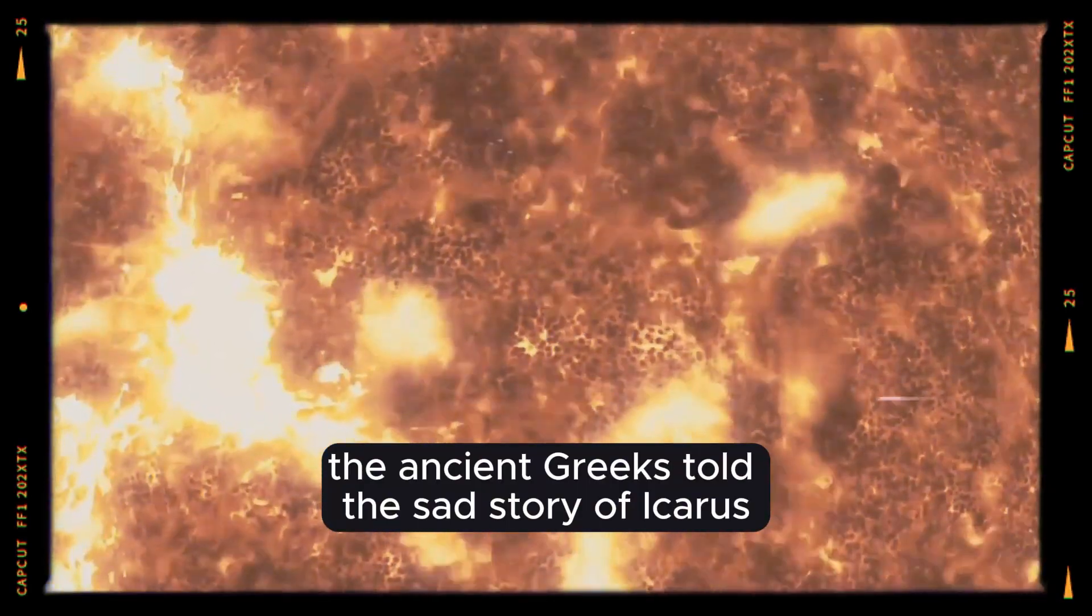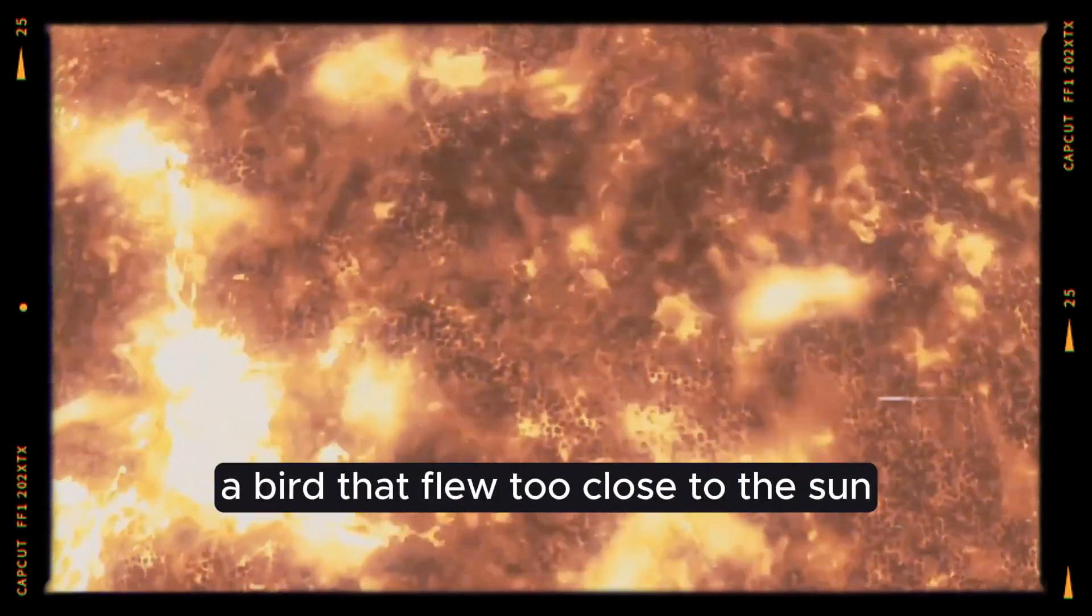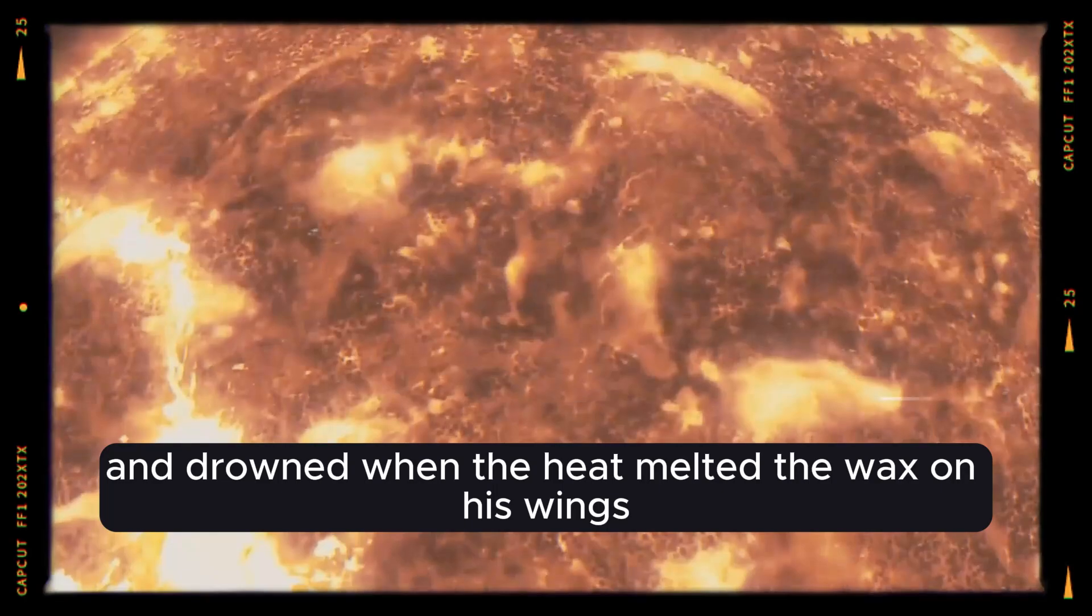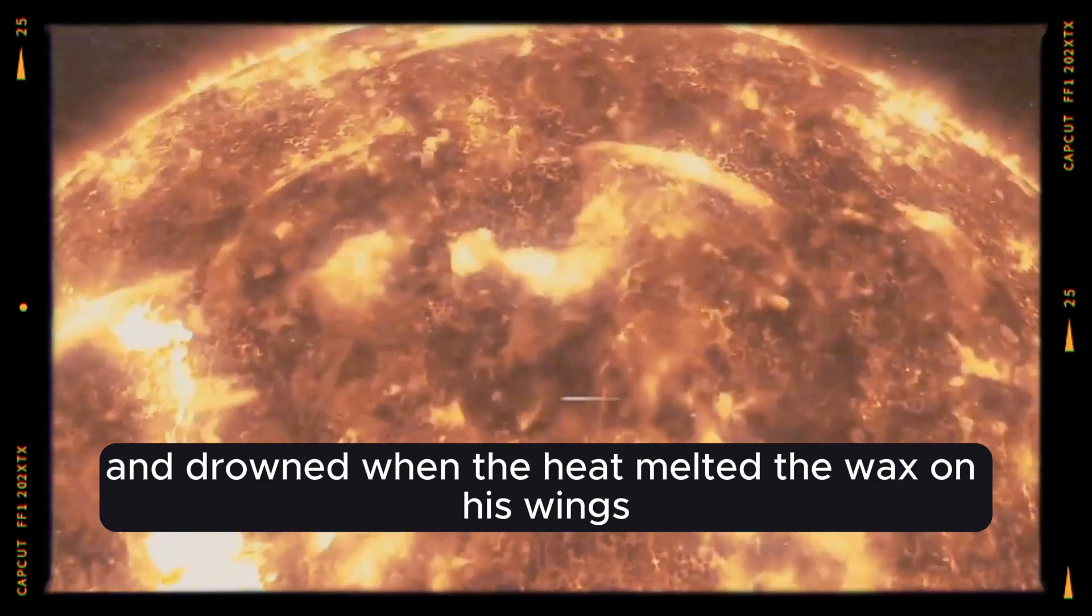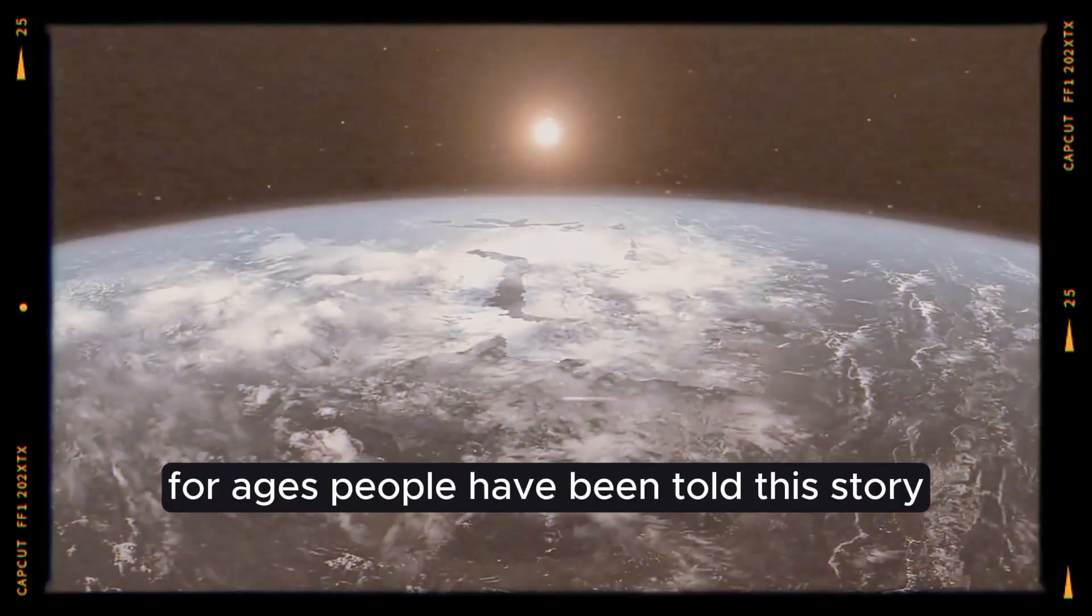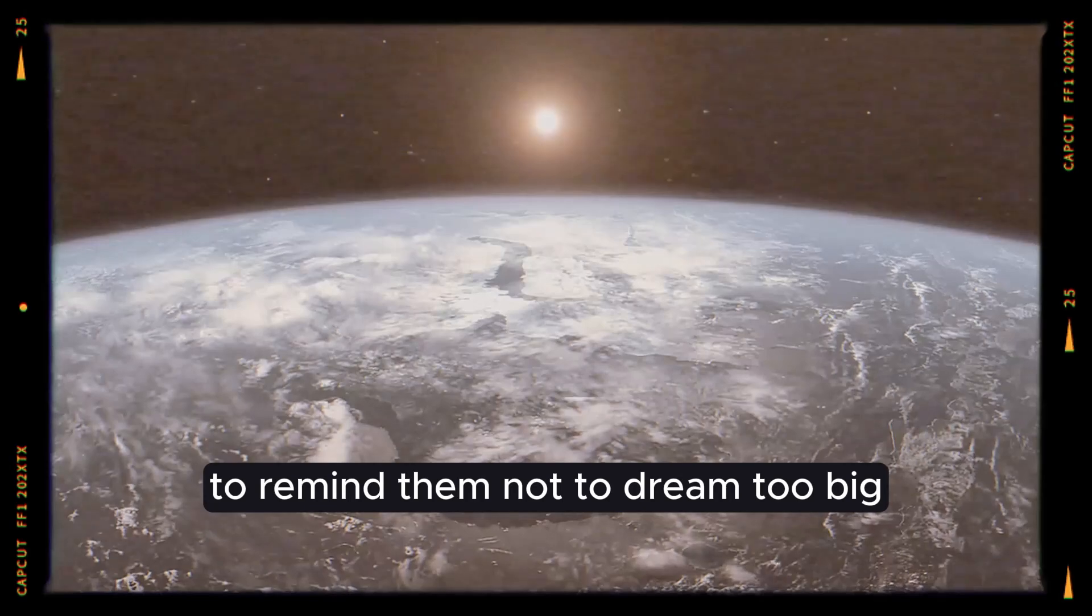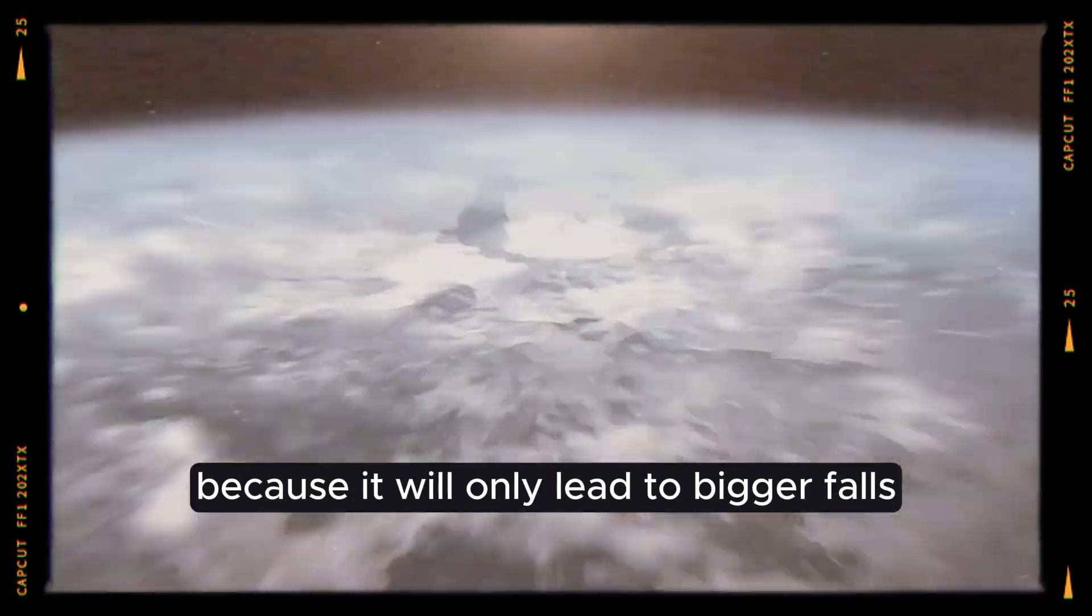The ancient Greeks told the sad story of Icarus, a bird that flew too close to the sun and drowned when the heat melted the wax on his wings. For ages, people have been told this story to remind them not to dream too big, because it will only lead to bigger falls.